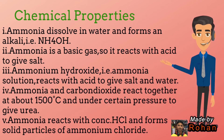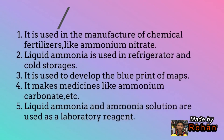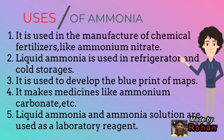Chemical properties of ammonia: one, ammonia dissolves in water and forms an alkali, that is NH4OH; two, ammonia is a basic gas so it reacts with acids to give salt; three, ammonium hydroxide solution reacts with acid to give salt and water; four, ammonia and carbon dioxide react together at about 150°C under certain pressure to give urea; five, ammonia reacts with concentrated HCl and forms solid particles of ammonium chloride.